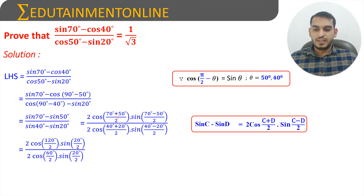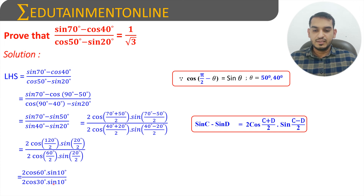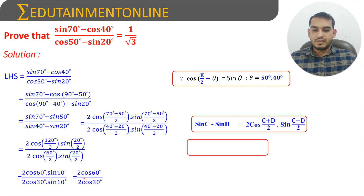Now 70 plus 50 degrees is 120 and 70 minus 50 is 20 degrees, and 40 plus 20 degrees is 60 degrees and 40 minus 20 is 20 degrees. So 120 by 2 is 60 and 60 divided by 2 is 30 degrees. We can write it as 2 cos 60 degrees into sin 10 degrees divided by 2 cos 30 degrees into sin 10 degrees. We can cancel sin 10 degrees and the factor of 2.